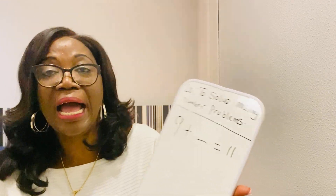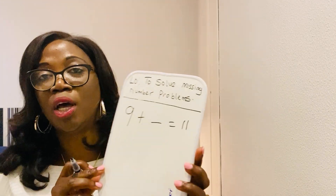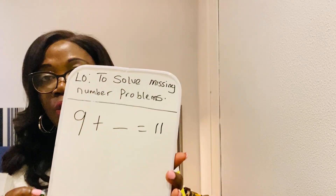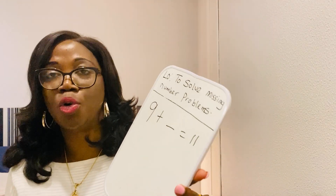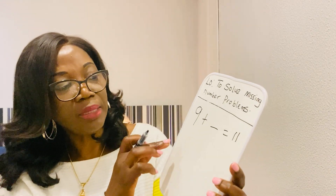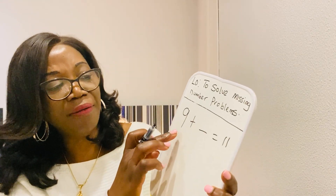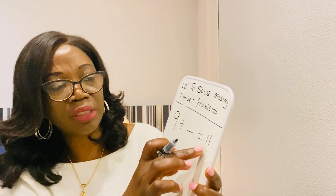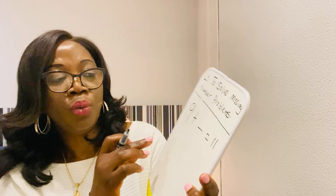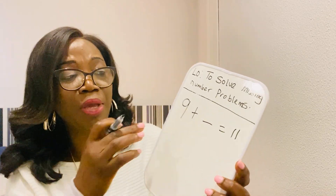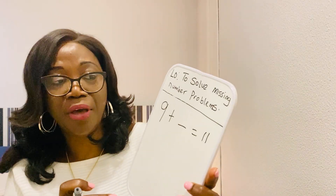But today I am going to help you and show you an easy way to do this. So the first question we are going to do, we are going to start simple. We are going to start with an easy number. So let's say you have 9, add something equals 11. We are not sure how to do this, but the thing I want you to always remember when you have this type of question is to do the inverse.